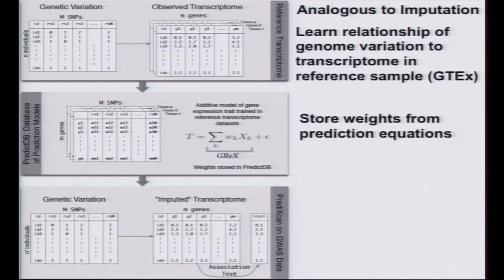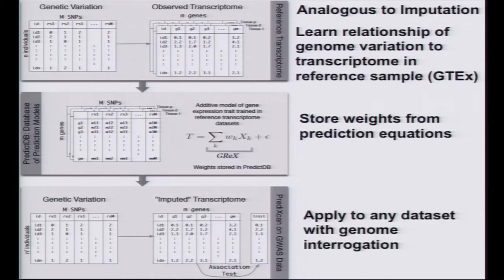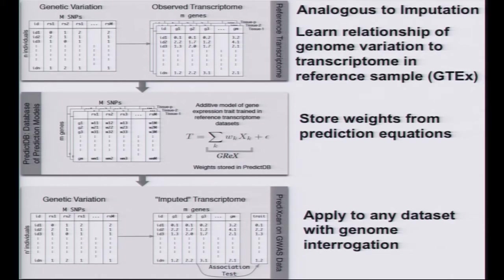Here, we use GTEx as our reference panel and learn the relationship between genome variation and measured transcript levels. We store the weights from these prediction equations, and then in any dataset where we have genome interrogation at the common variant level — whole genome sequencing or just a GWAS — we can impute transcript levels in all tissues measured in GTEx and use that as an endophenotype for a gene-based test of whether genetically determined transcript levels are associated with your phenotype of interest.